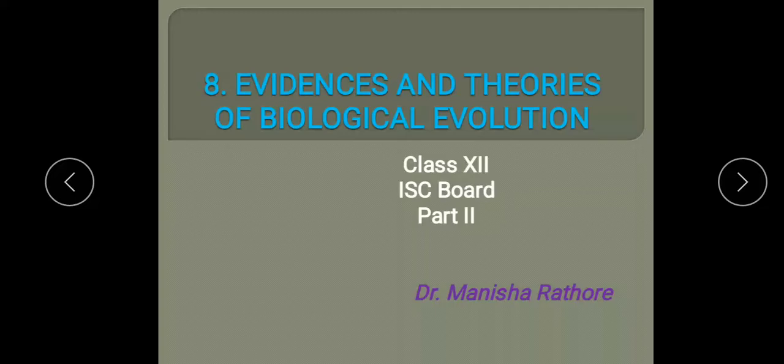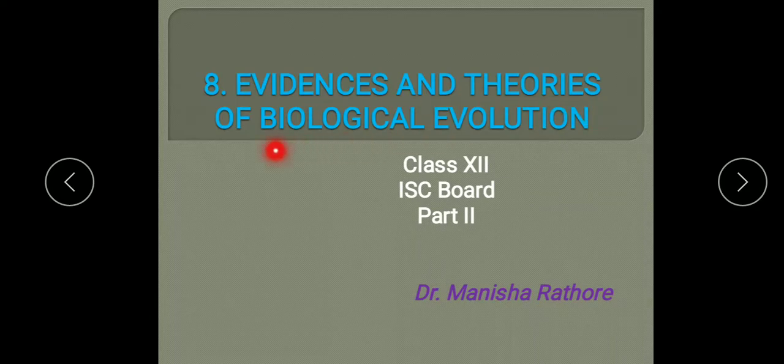Hello students, today we will start the next part of the chapter on evidences and theories of biological evolution. In the first part we studied two different types of evidences provided by scientists for biological evolution: evidences from comparative anatomy and morphology, and evidences from embryology. Today we will study paleontological evidences, biogeographical evidences, and genetics and molecular biology evidences.